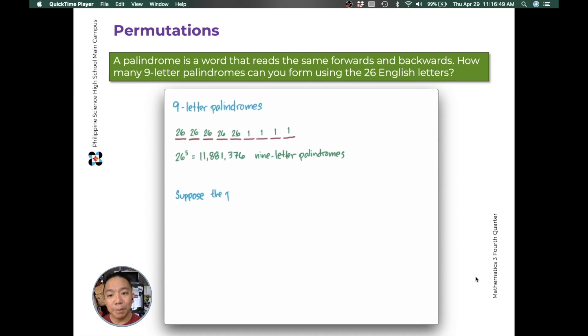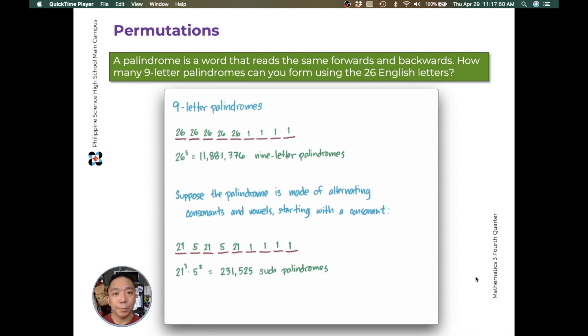We could expand our problem a bit. So suppose the palindrome has some rules. It must be alternating consonants and vowels starting with a consonant. So how will our problem change? First letter, 21 possibilities because we have 21 consonants. One possibility remains for our last letter. For the second letter, this will be 5 possibilities for the 5 vowels. Then 1 for the second to the last letter. Then again, another 21 letters and 1 letter. 5 letters, 1 letter. And 21 consonants again for the middle letter. This equals 21 cubed times 5 squared, which is 231,525 such palindromes.